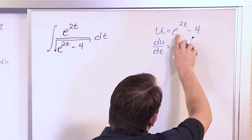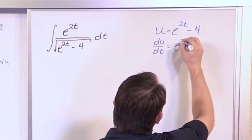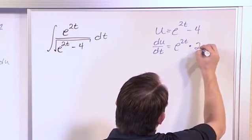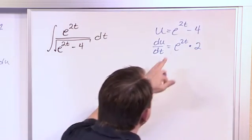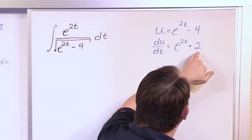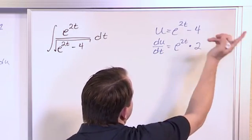Well, the derivative of this is going to be e to the 2t, because it's indestructible, times the derivative of the top, which is 2. That's just the chain rule. So the derivative of this is itself, because it's indestructible, times the derivative of the top, which is 2. The derivative of this is 0.